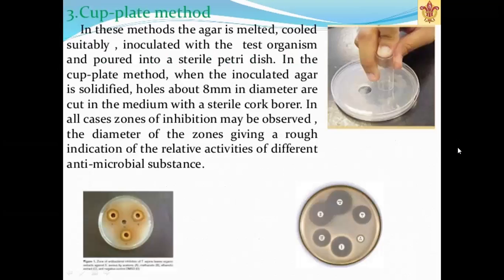Cup plate method: the agar is melted, cooled, suitably inoculated with the test organism, and poured into a sterile petri dish. When the inoculated agar is solidified, holes about 8 mm in diameter are cut in the medium with a sterile cork borer. A zone of inhibition may be observed. The diameter of the zone of inhibition is used as an indication of the relative activity of different antimicrobial agents, and it can be used to determine MIC and MBC.